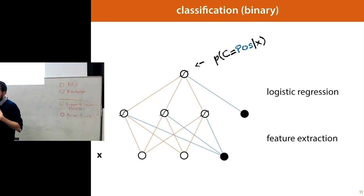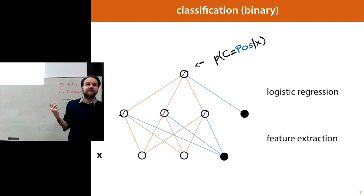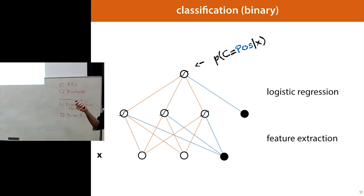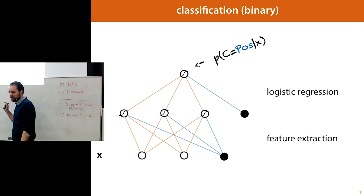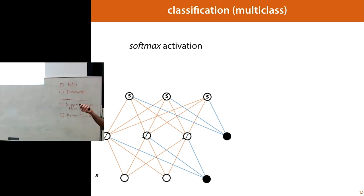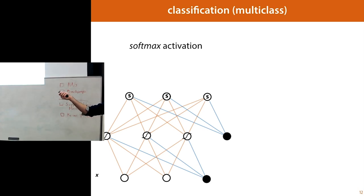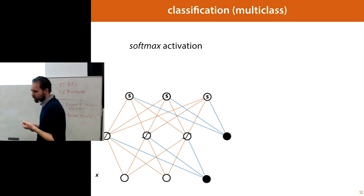One thing we haven't seen is what to do with multiple classes. For digit classification with 10 different classes, a single sigmoid node won't suffice — that only works for two classes. For multiple classes we prefer to use one node for each class. The activation we apply is called a softmax activation, which ensures that the output values are all positive and sum to one.